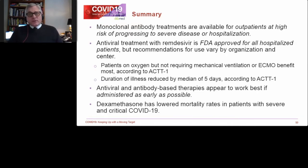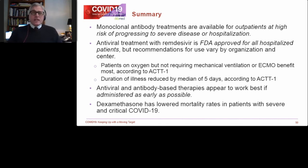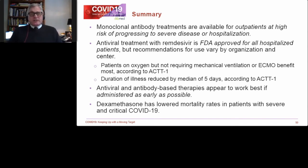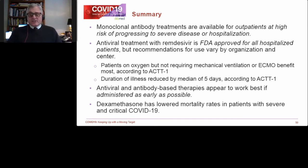A couple of key summary points: Monoclonal antibodies are only authorized for use in outpatients who meet the EUA criteria for being at high risk for severe complications of COVID-19. Antiviral therapy with remdesivir is FDA approved for all patients, but leading guideline authorities suggest those who benefit most are people on oxygen but not so ill as to be in the ICU on a vent — with an average five-day reduction in duration of illness. Both antiviral and antibody-based therapies — including plasma and remdesivir — appear to work best if given as early as possible in illness. And lastly, dexamethasone has been a key drug for patients more ill on oxygen or in the ICU, with lowered mortality.